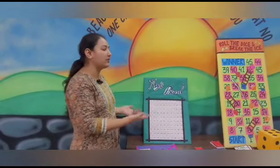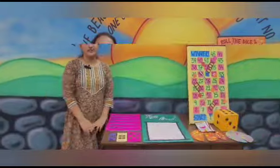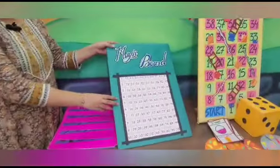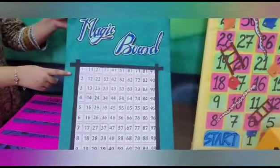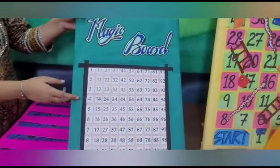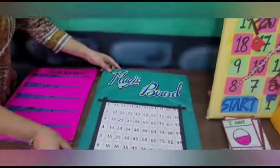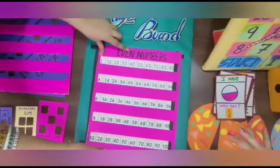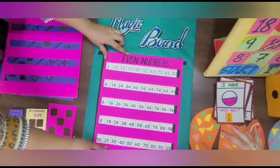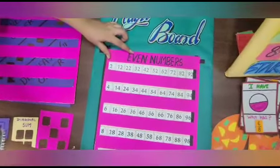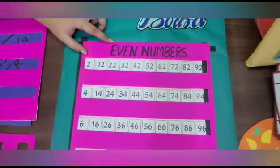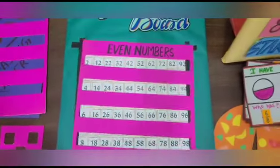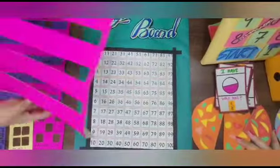Let's start with the Magic Board Game. This magic board can be used to teach various mathematical concepts to our students. Our first cutout is for even numbers — we can ask the student to place this cutout on the magic board and read out the even numbers between 2 to 100.